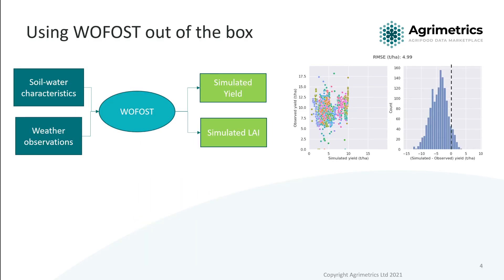Out of the box we have two inputs for WoFost: the soil and the weather, which was taken from the Agrometrics data marketplace. The two outputs of WoFost we're interested in today are the yield and the leaf area index. If we look at the yield for this basic WoFost model we can see it's got a root mean squared error of around five tons per hectare.